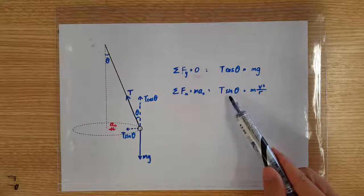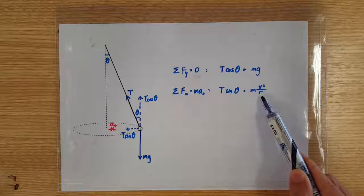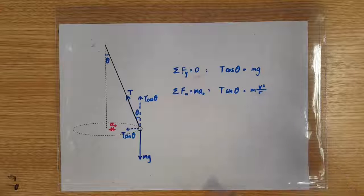Horizontally, of course, we have T sin θ providing the required centripetal force, which we are going to write as mv squared over r.